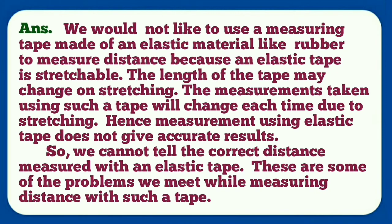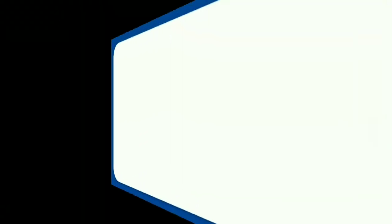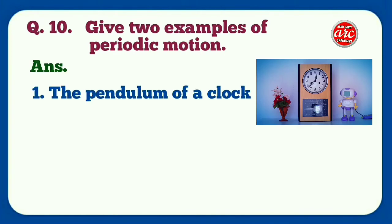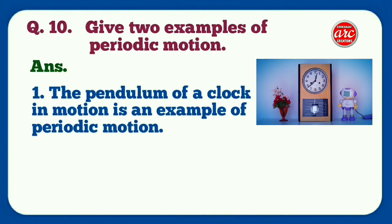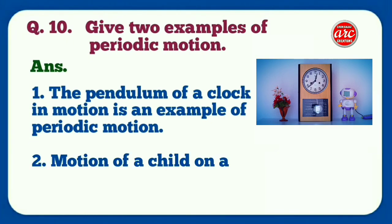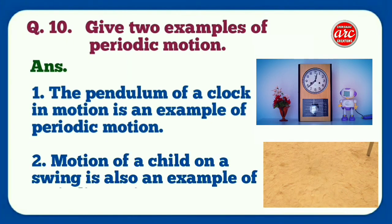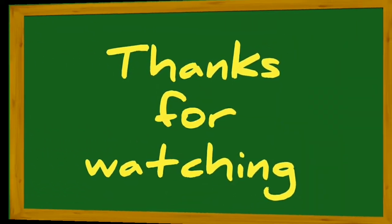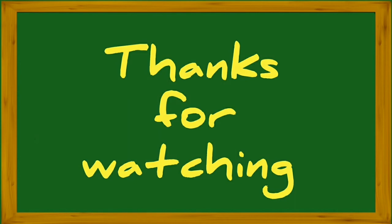Question number 10: Give two examples of periodic motion. Answer: Number one, the pendulum of a clock in motion is an example of periodic motion. Number two, motion of a child on a swing is also an example of periodic motion. These were the question answers of the chapter.